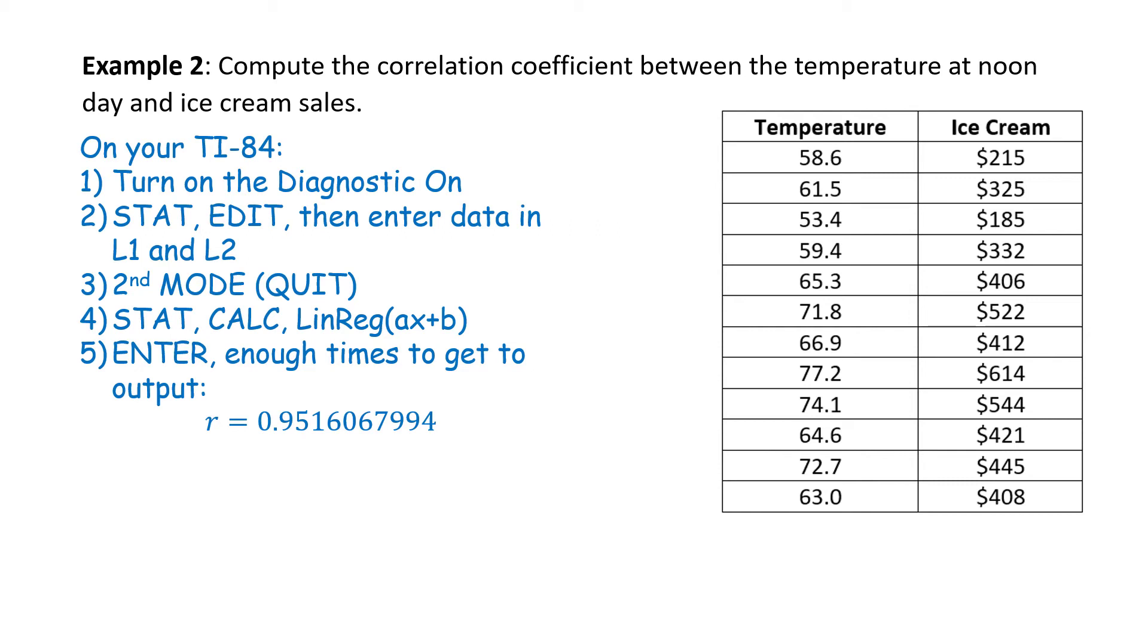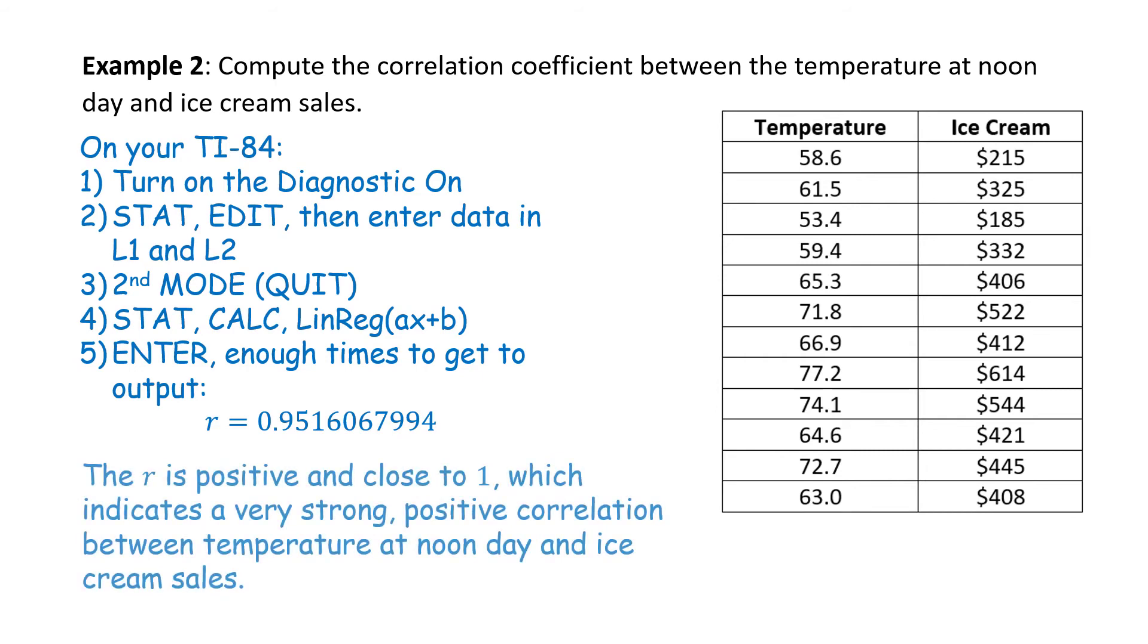What does the number mean? The R is positive and close to 1, which indicates a very strong positive correlation between temperature at noon day and ice cream sales. By the way, this ought to make sense to you that the higher the temperature, the more ice cream is sold.